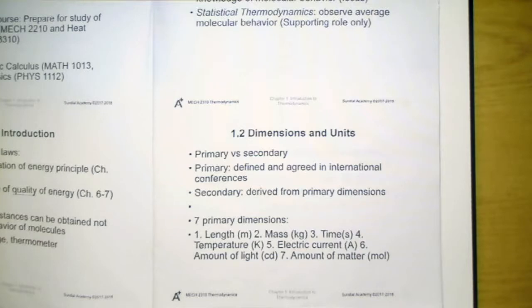Only the first four primary dimensions and the last one will be used frequently in this course. For others, for example, electric current as well as amount of light, they are related to other topics but not thermodynamics, so we will not talk about this in this course.